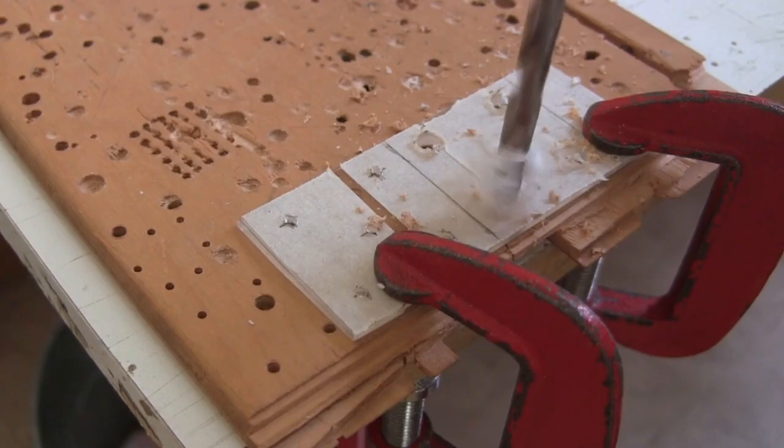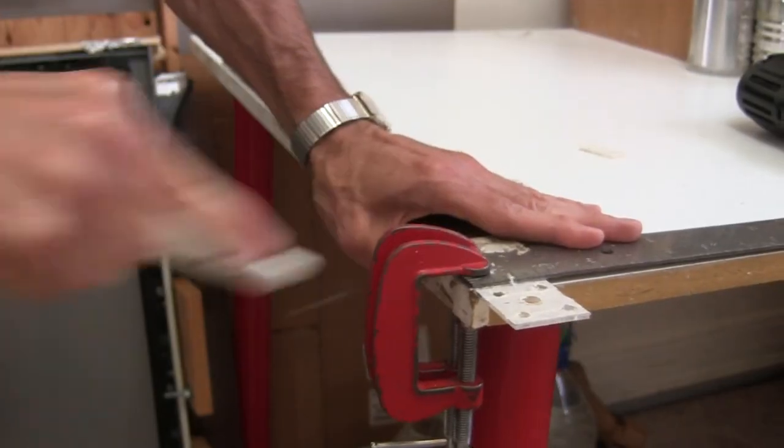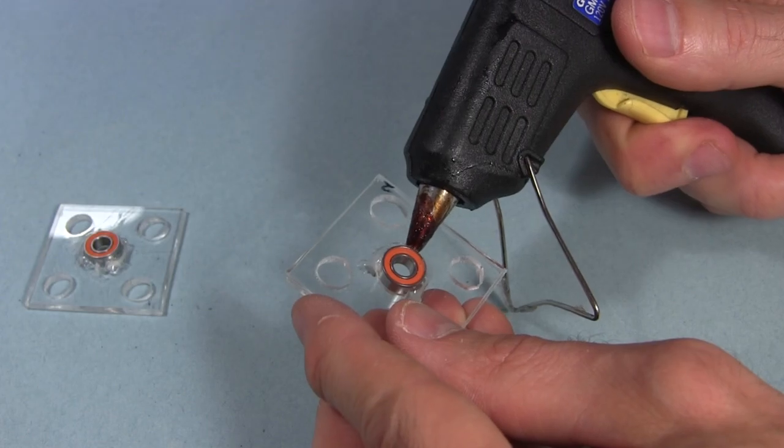To mount the bearings, I drill holes in some plastic plates, use a plastic cutting knife to cut them, and hot glue the bearings to them.